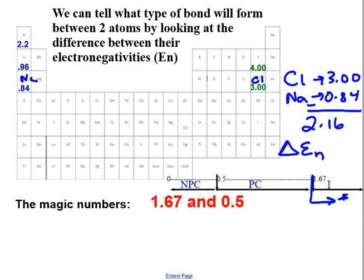When we subtract, we always subtract the bigger value minus the smaller value. Compare them to where they would land on a number line to determine if they are ionic, polar covalent or non-polar covalent.